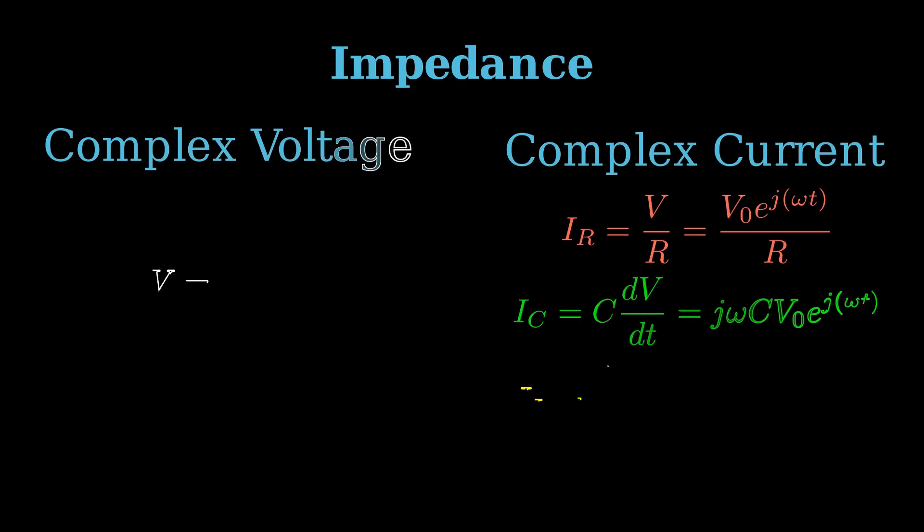So now that we've gone over complex expressions for voltage and current, we can now learn about impedance. We use Ohm's law once again to derive the complex form of resistance for each circuit component.